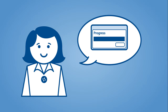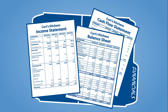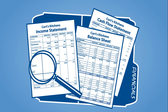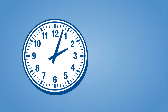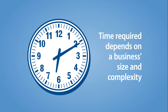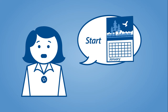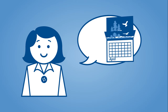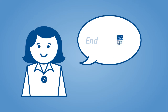The auditor will keep Curt informed of the progress and will be available to answer any questions. The auditor will review Curt's business records and make sure he's charging or paying the right amount of tax. The length of time it takes to complete an audit depends on the size and complexity of Curt's business, the state of his records, and his cooperation through the process. The auditor will advise Curt of the start and end dates of the audit period before she begins her work. If the auditor needs to extend those dates, she will discuss this too.